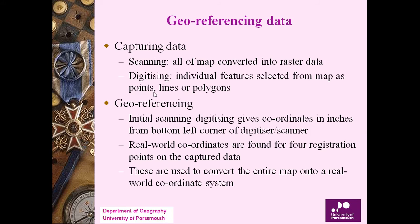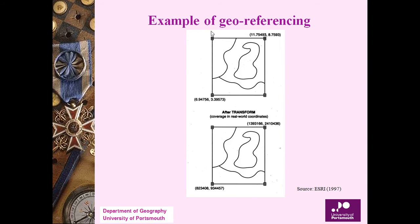Georeferencing: initial scanning or digitizing gives coordinates in inches from the bottom-left corner of the digitizer or scanner. Real-world corner coordinates are different, so they are found using four register points of the captured data. You need to map the screen or paper data to actual geographic locations, and these are used to convert the entire map onto a real-world coordinate system.